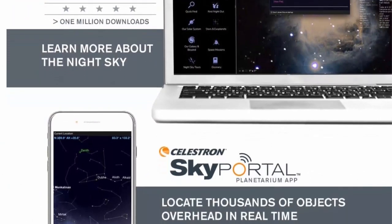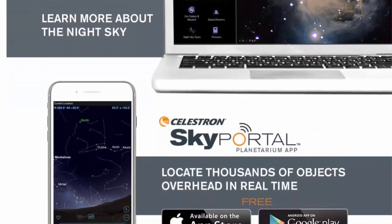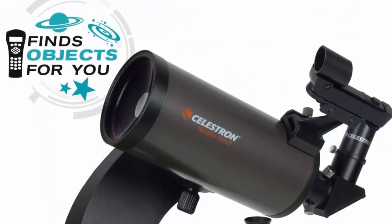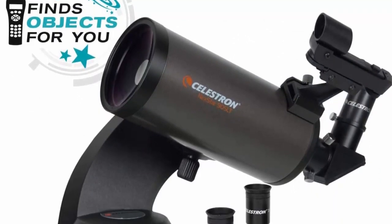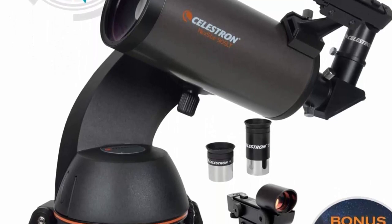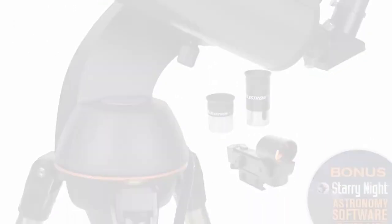Included 20mm eyepiece renders 37.5x power. The telescope is small but powerful for its size, having 750mm focal length in a small 200mm tube. You can use other 1.25-inch eyepiece to change magnification.